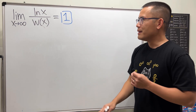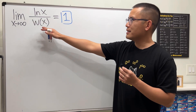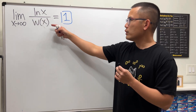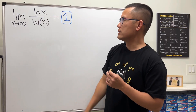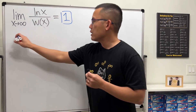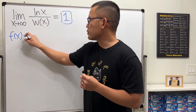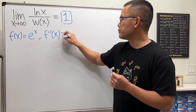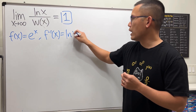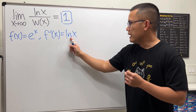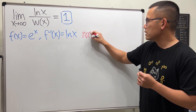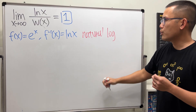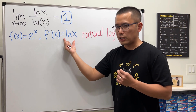I'll show a quick review of the Lambert W function, but first let's draw some connection with ln(x). If we start with the function eˣ, its inverse function is precisely ln(x). The 'n' stands for natural and the 'l' stands for log, so in other words this is the natural log function.